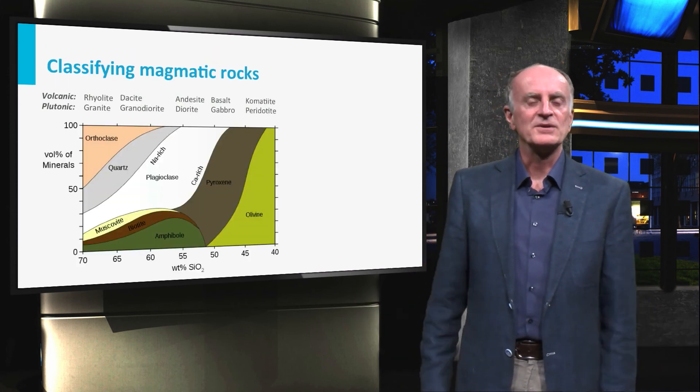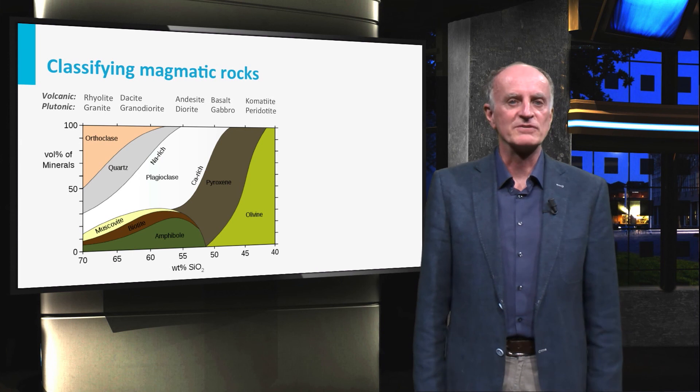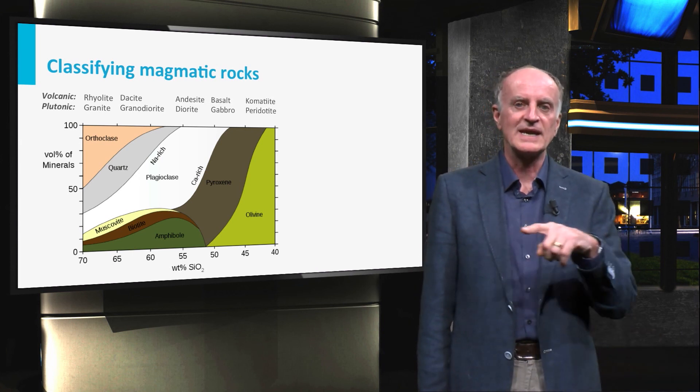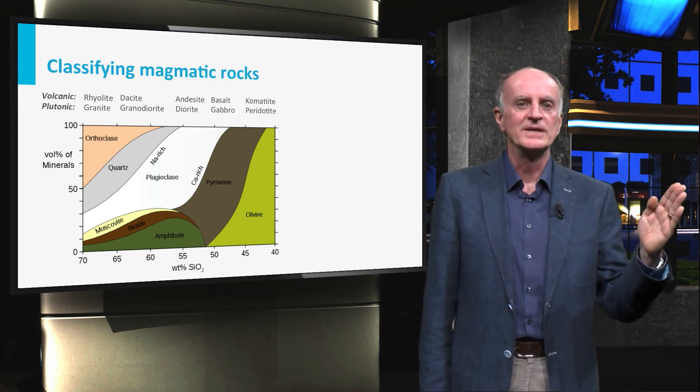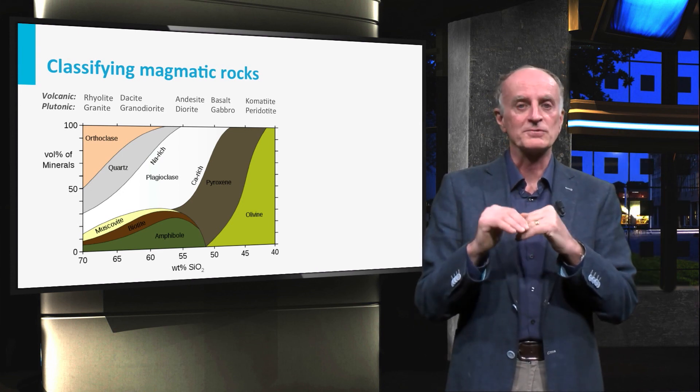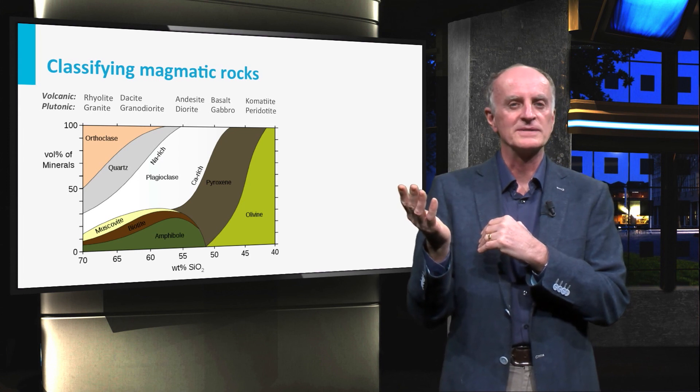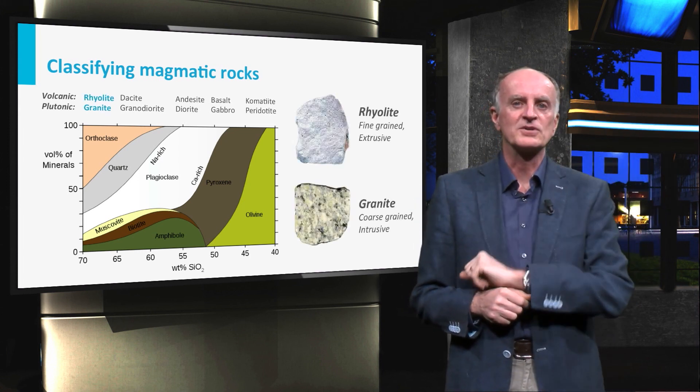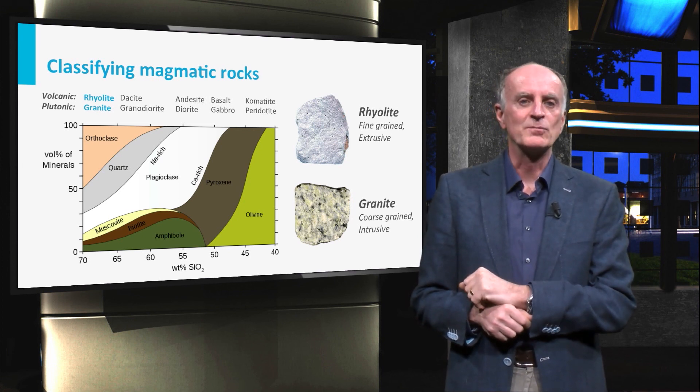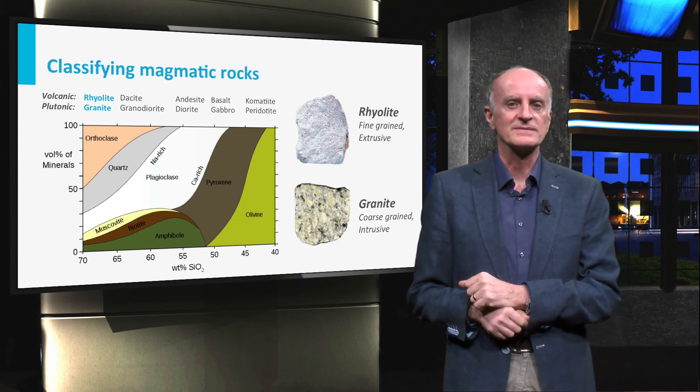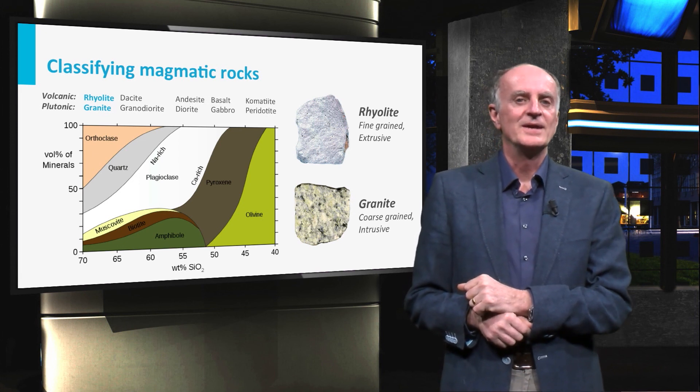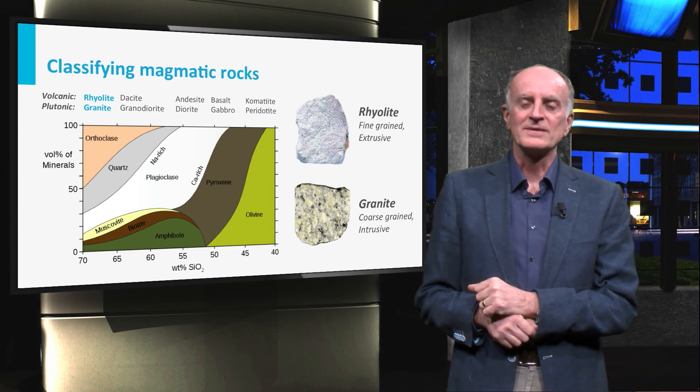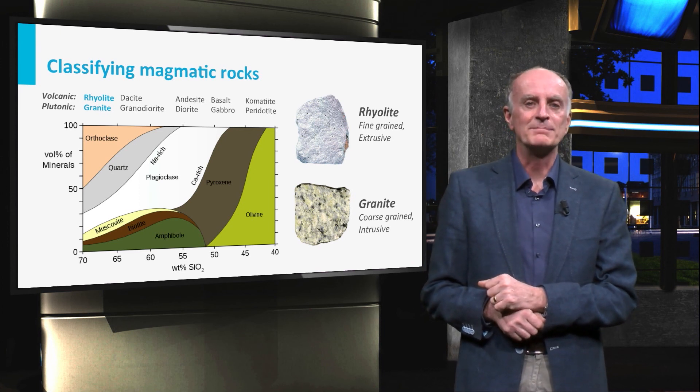In this last slide you find a scheme for the classification of magmatic rocks. In a plot showing the percentage of silica SiO2 versus various types of minerals, you can see that different domains correspond to different types of rocks. And as you can see, two different names exist for each composition, one for intrusive and one for extrusive rocks. We have now looked at magmatic rocks and now you are ready to tackle the second type of rocks, namely metamorphic rocks.